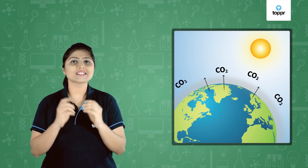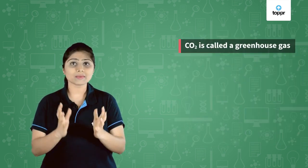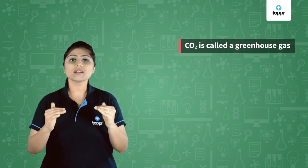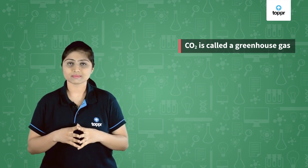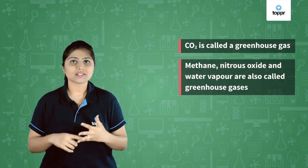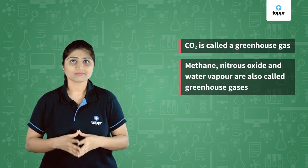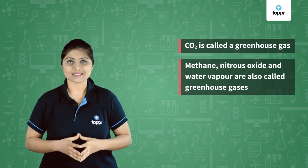But which substance in the atmosphere traps these reflected radiations? CO2 is one of the gases responsible for this effect. That is why we call carbon dioxide a greenhouse gas. Carbon dioxide traps the heat and does not allow it to escape into space. Other gases like methane, nitrous oxide, and water vapour also contribute towards this effect, so like carbon dioxide, even these are called greenhouse gases.